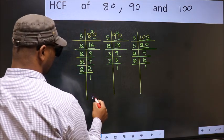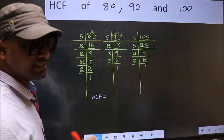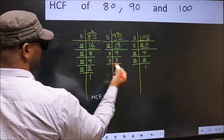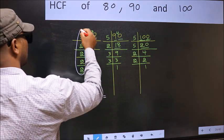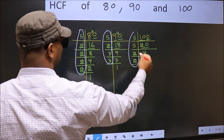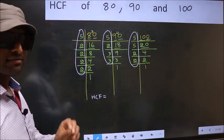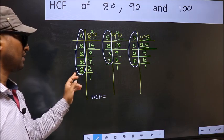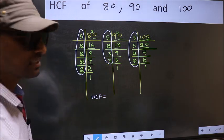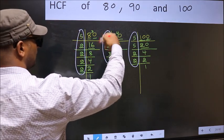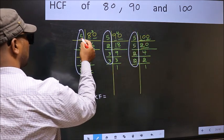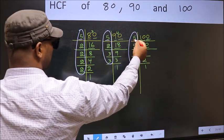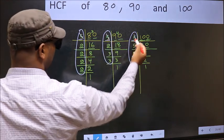Therefore our HCF is the product of numbers which are present in all three factorizations — here, here, and here. Starting with 5: do we have 5 in the first factorization? Yes. Do we have 5 in the second? Yes. Do we have 5 in the third? Yes. So write down 5.